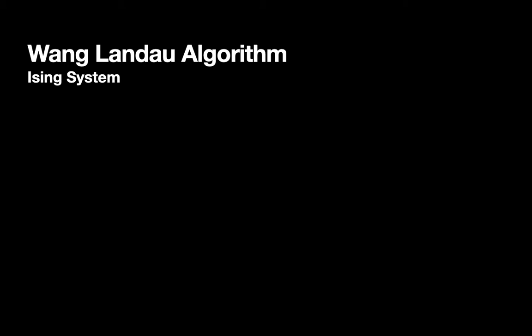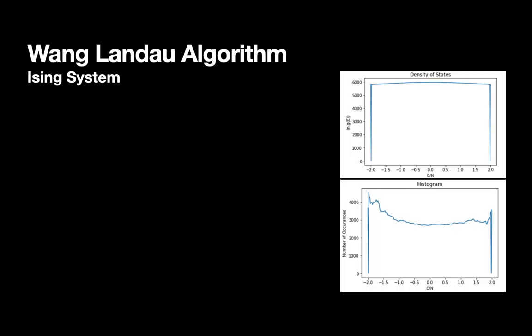After running the Wang Landau algorithm on the Ising model, of course depending on how exactly you implement it, the results should look something like this, where the top graph is the natural log of the density of states after repeated iteration of the algorithm, and the bottom is an example of the histogram at the end of some iteration.